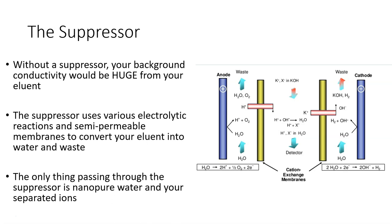Setting your suppressor's current too high can result in seeing no peaks at all, and setting your suppressor's current too low can result in ridiculous looking massive peaks and a ton of background noise. In the end, the only thing that passes through your suppressor is nano pure water and your separated ions, so your conductivity detector can work efficiently.